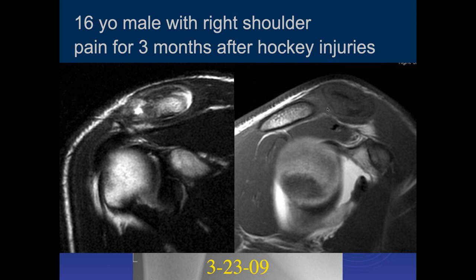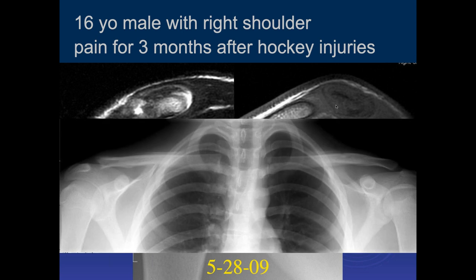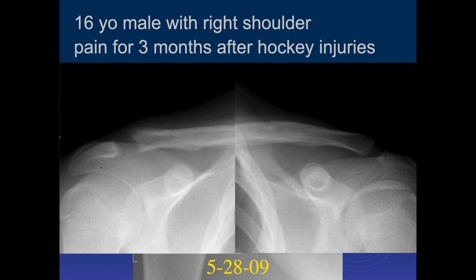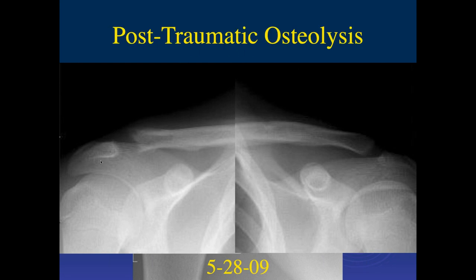What are you thinking? Distal clavicular osteolysis. You can see that the right side is abnormal compared to the left. You see it in weightlifters — chronic repetitive trauma. It's the distal clavicle, and you get bone resorption because you keep irritating it and don't allow it to heal. You end up with separation. So this is post-traumatic osteolysis.